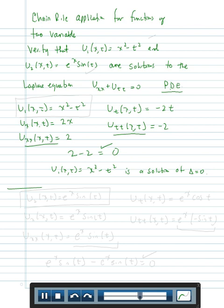Our next solution that we're going to check will be u sub 2 of x, t, and that's equal to e to the x sine of t. If we take the first partial with respect to x, we hold the variable t as a constant, and the derivative with respect to x of e to the x is e to the x, with sine of t held as a constant. Taking the second partial with respect to x, the derivative of e to the x is itself e to the x, so we get e to the x times sine of t for the double partial with respect to x.